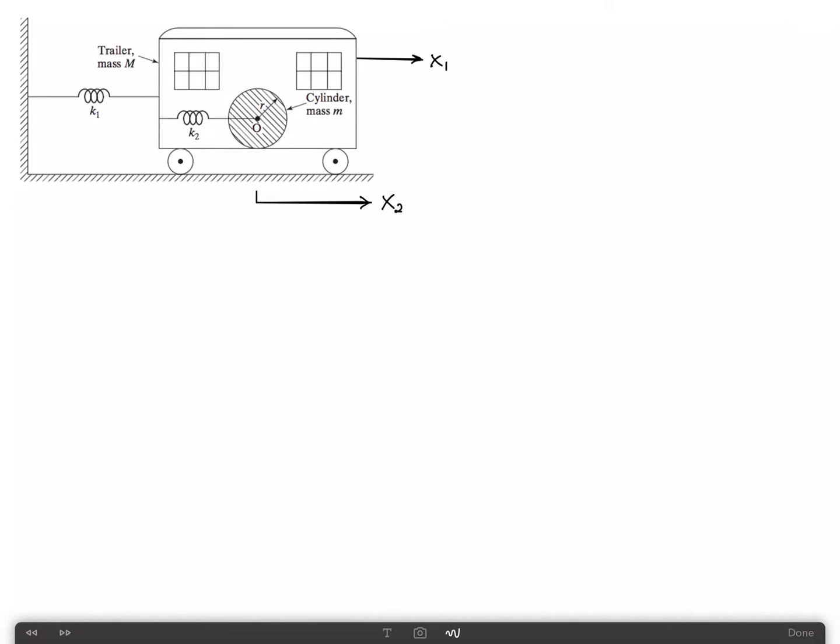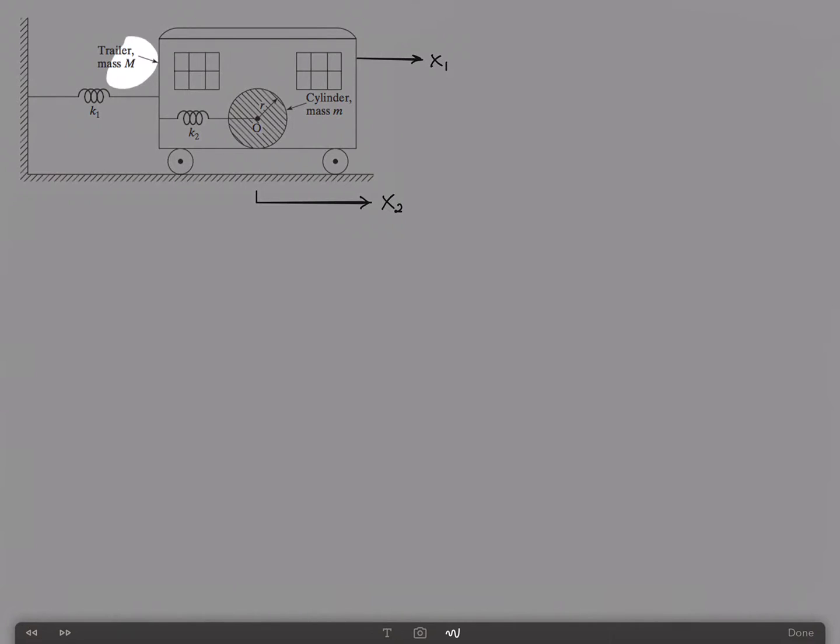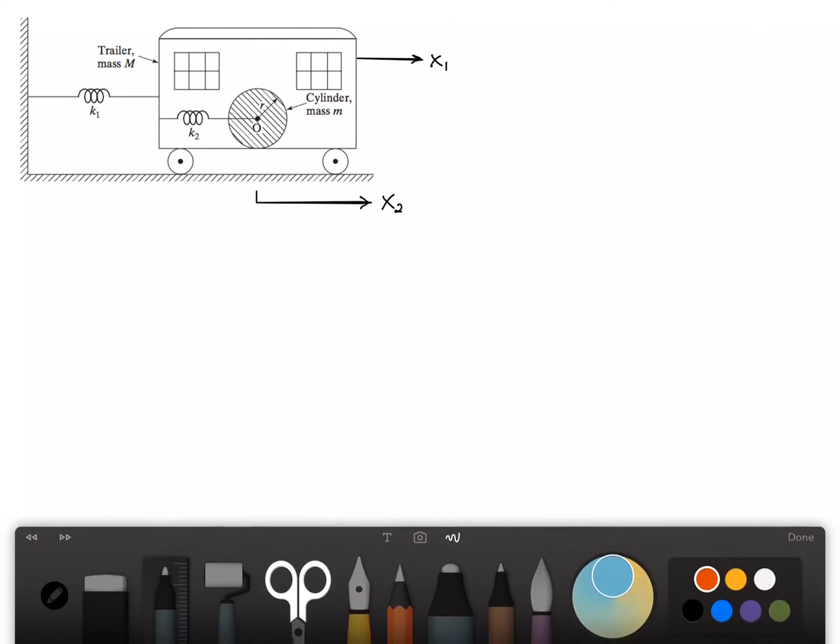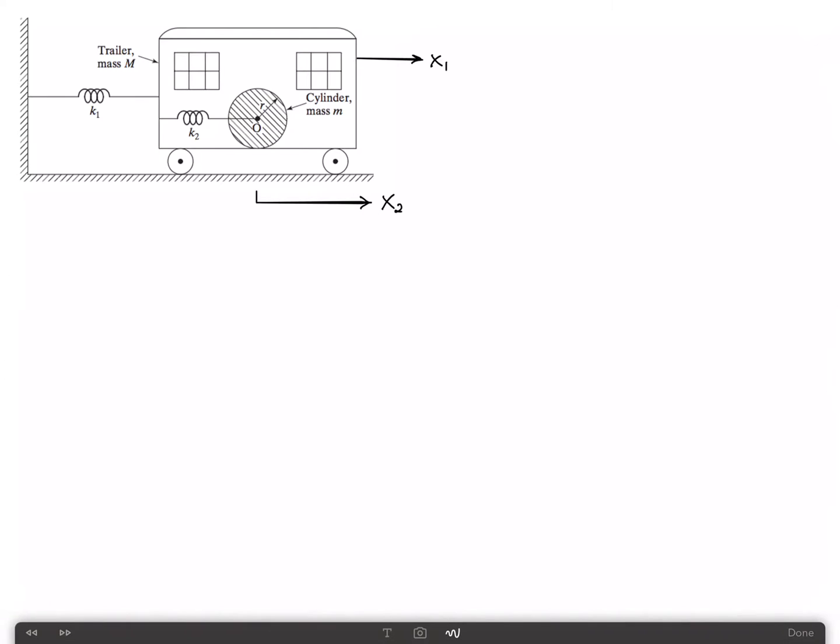In this video we'll derive the equations of motion for the two degree of freedom system shown in the figure. This comprises a cart of mass M sliding along a frictionless surface, and on top of the cart is a cylinder of mass m.